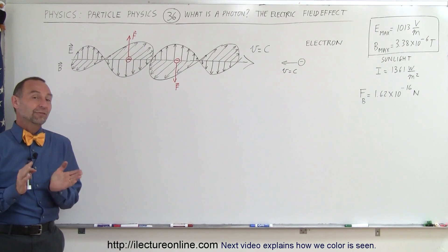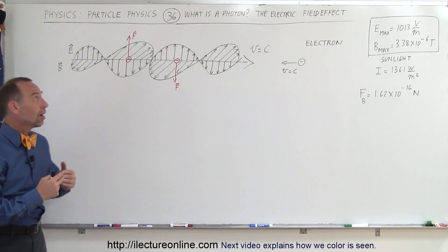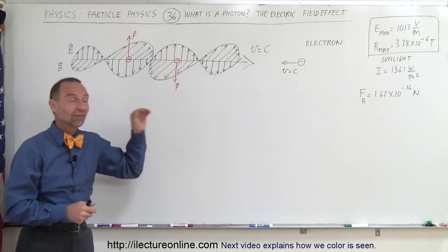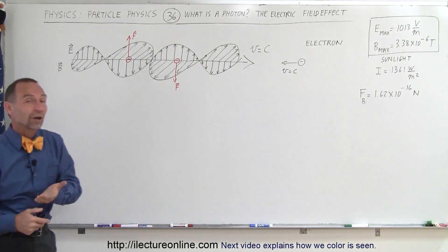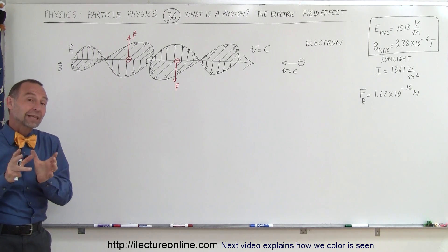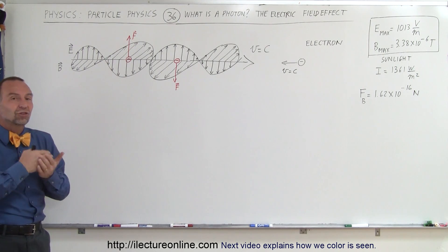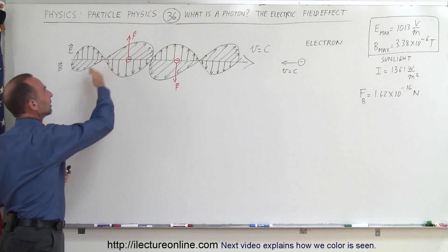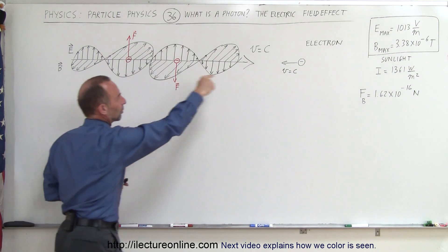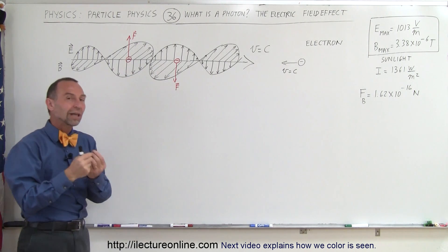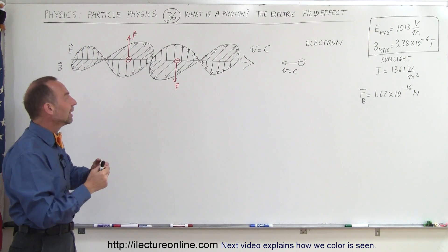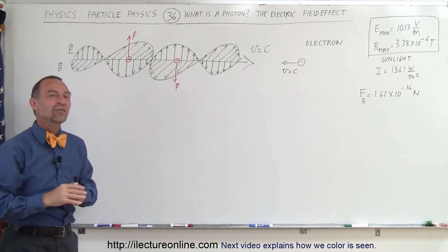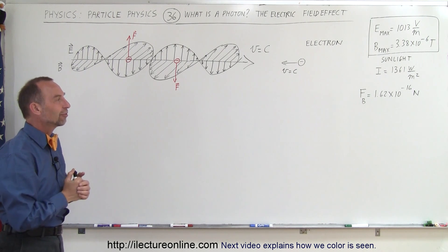Welcome to ElectronLine. In the previous video we saw the effect that a photon has on an electron as it zips past at the speed of light. The effect we looked at was the changes in the magnetic field inside the photon — realizing that the magnetic field oscillations are left and right as the photon progresses, causing a force on the electron either up or down.